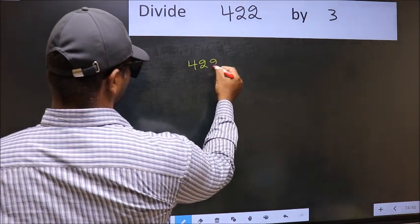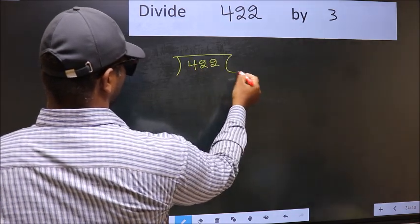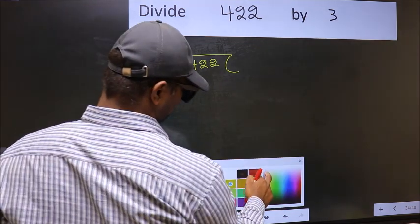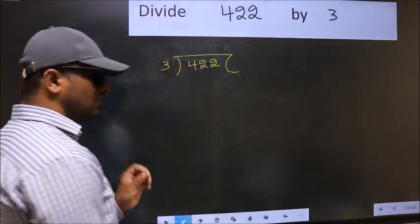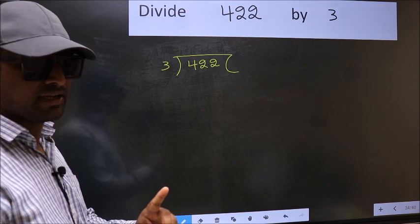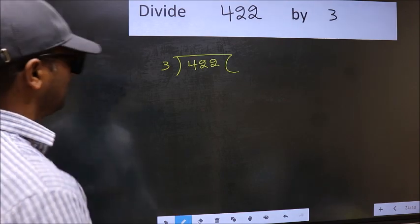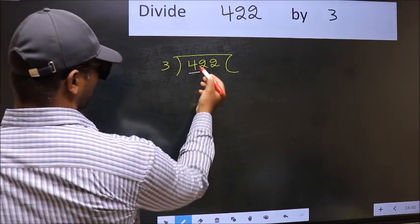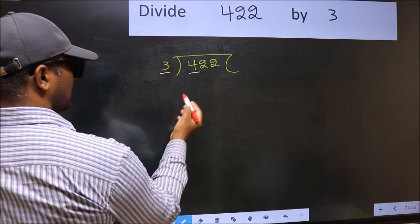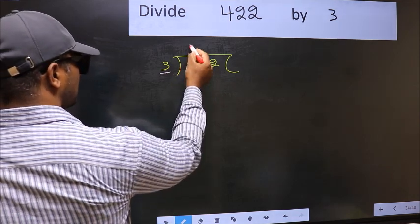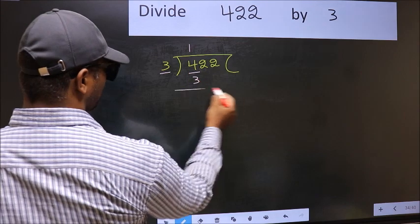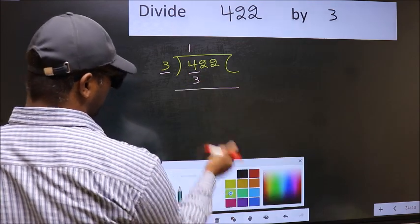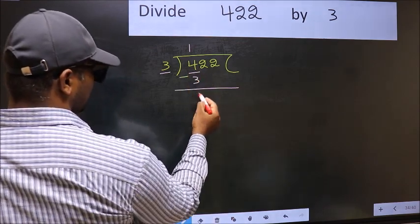422 and 2 and 3 here. This is your step 1. Next, here we have 4 and here 3. A number close to 4 in the 3 table is 3 once 3. Now you should subtract. 4 minus 3, 1.